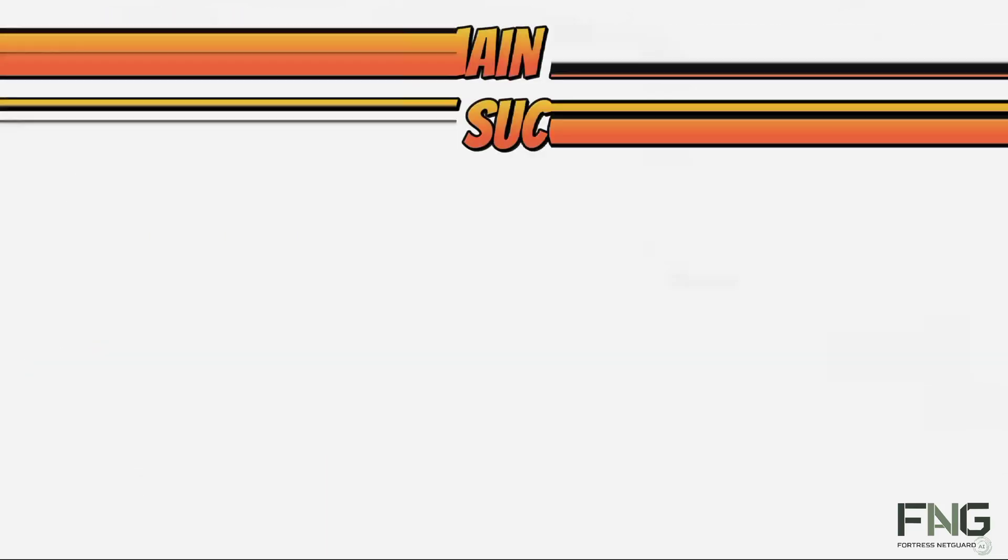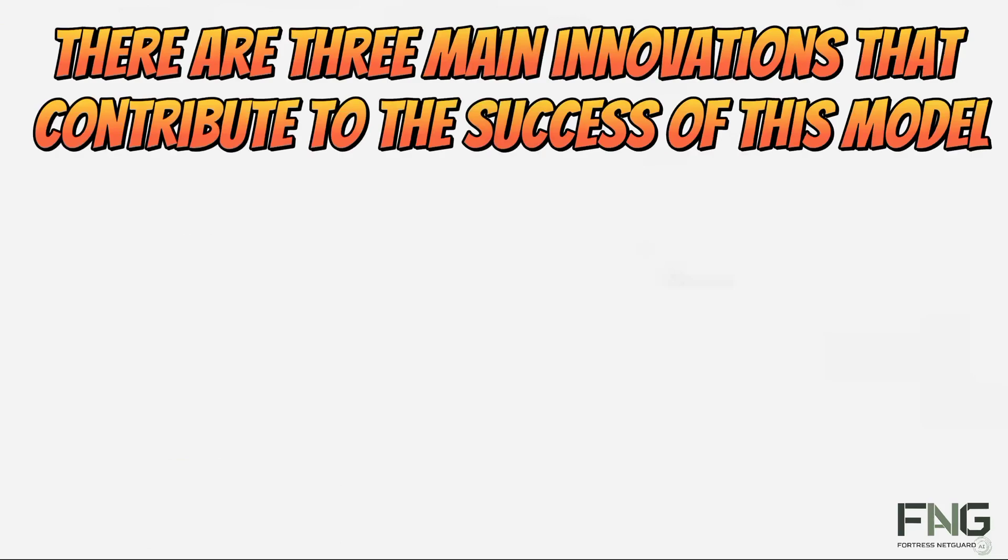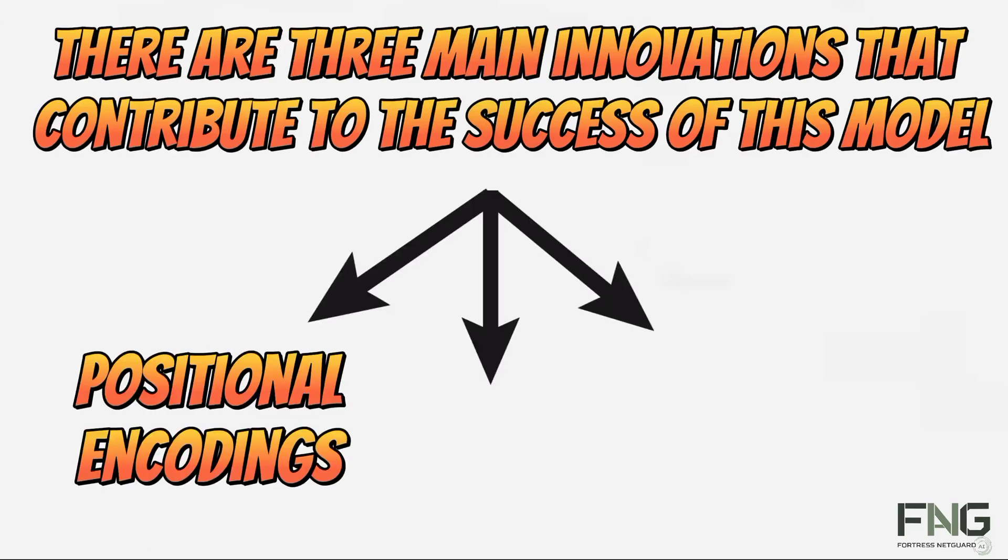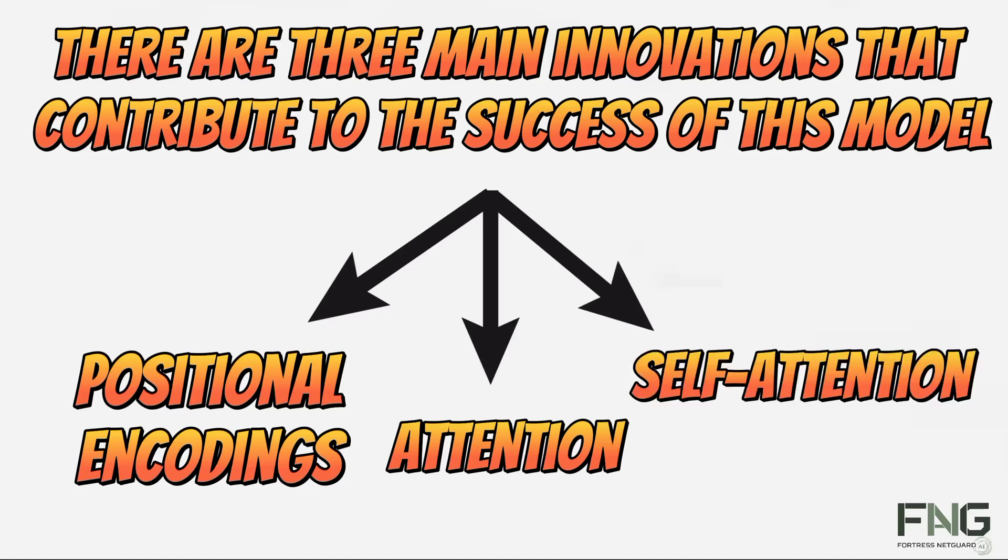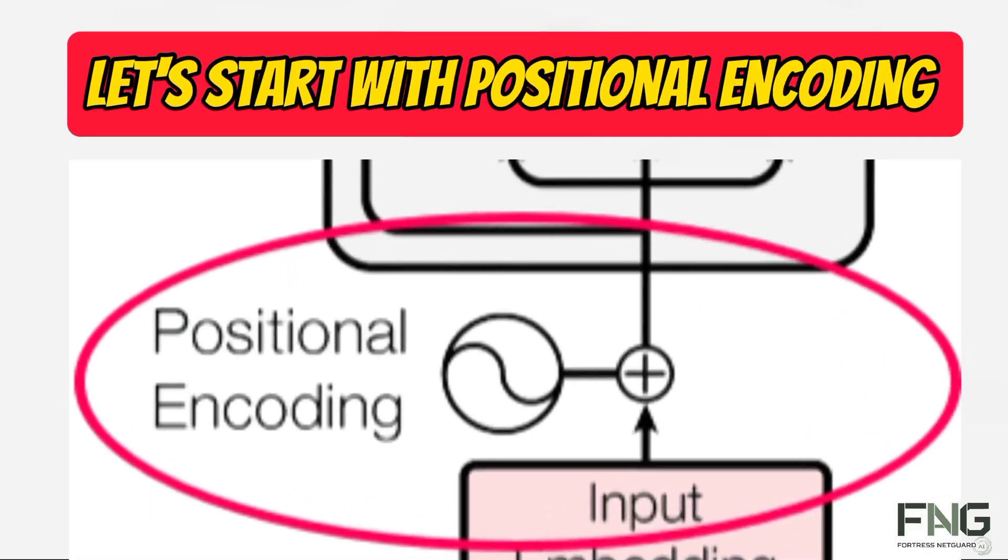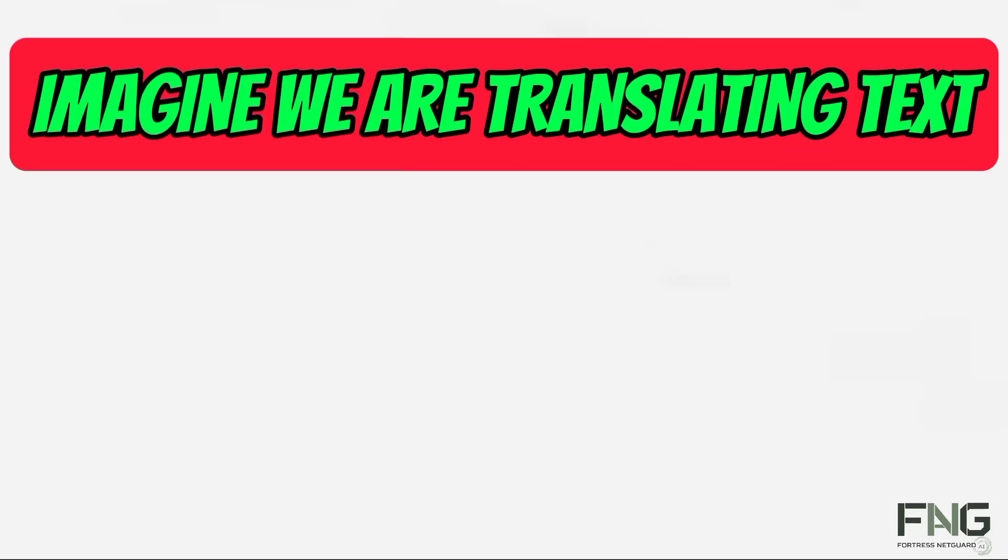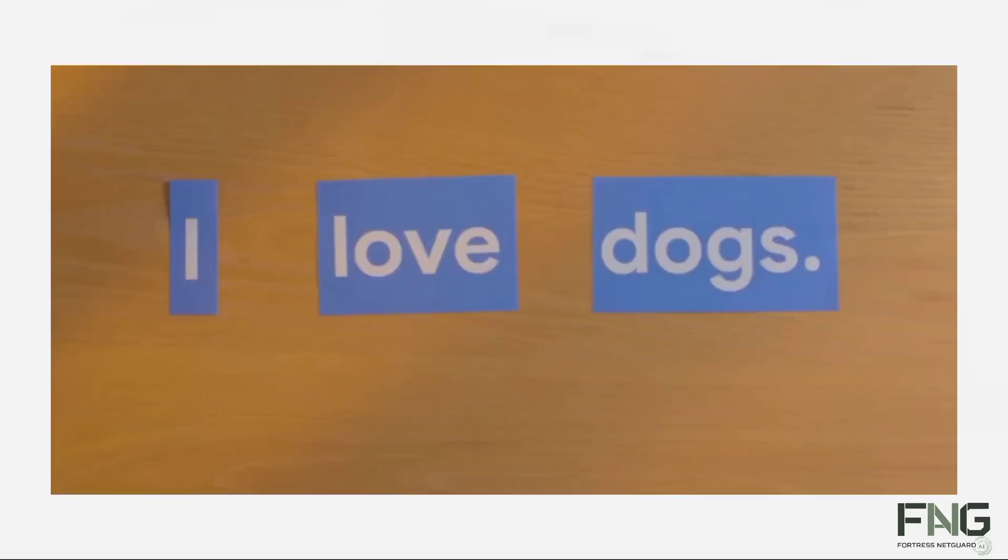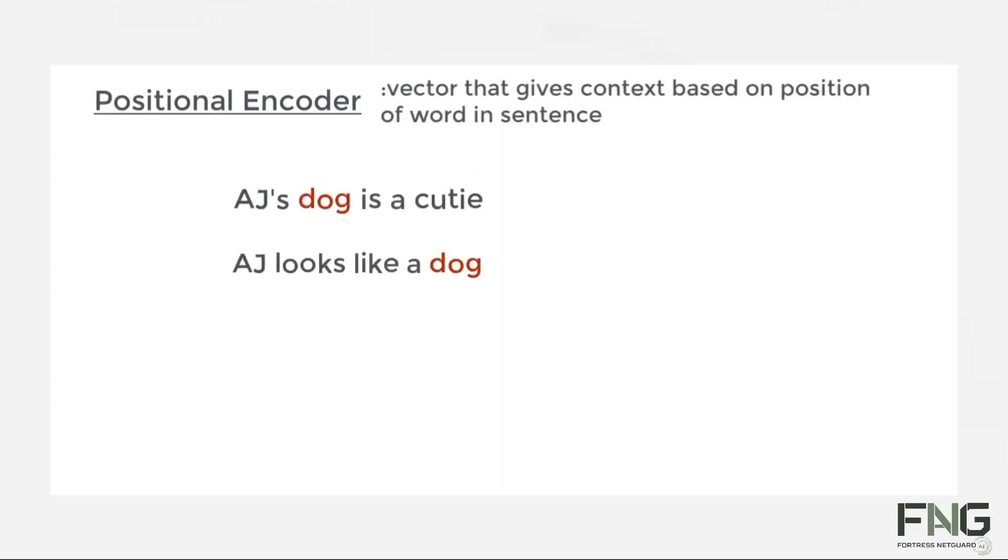But how do these transformers actually operate? It might seem complicated at first glance, but it's simpler than you might think. There are three main innovations that contribute to the success of this model: positional encodings, attention, and a specific type of attention known as self-attention. Let's start with positional encodings. Imagine we're translating text from English to French.